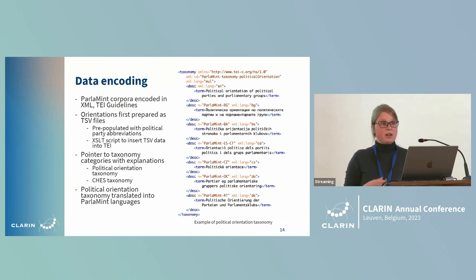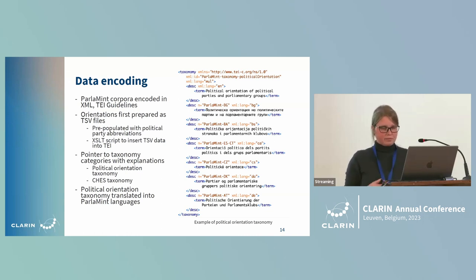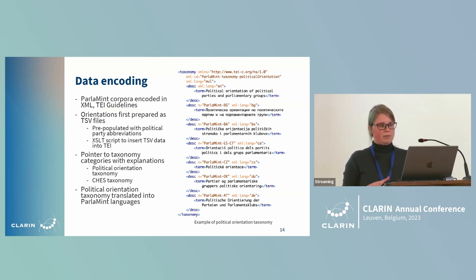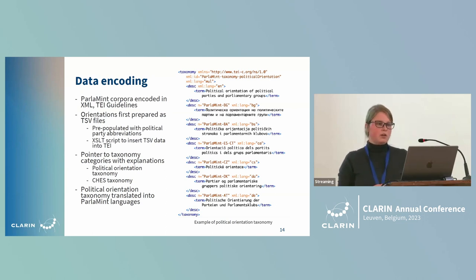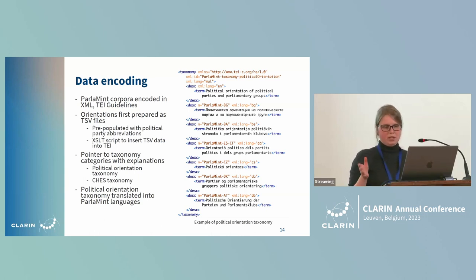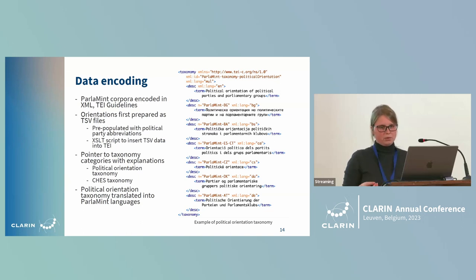The ParlaMint corpora and these values are encoded in XML following the TEI guidelines. The procedure involved first preparing TSV files pre-populated with political body abbreviations, then using an XSLT script to translate TSV data into TEI. We also provided pointers to taxonomy categories with explanations in different languages — a political orientation taxonomy referring to Wikipedia labels, and a CHES taxonomy with explanations for all 85 variables.